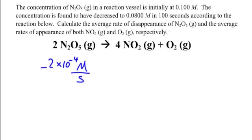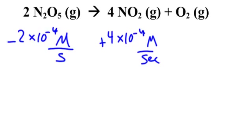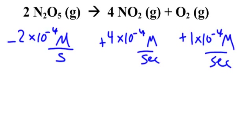N2O5 decreased at 2×10⁻⁴ molar per second. Looking at the molar ratios: N2 increases at 4×10⁻⁴ molar per second, because for every 2 N2O5s we have 4 NO2s. And the oxygen gas only increased at 1×10⁻⁴ molar per second, giving us a 2 to 4 to 1 ratio. Everything in chemistry, especially here, is proportional.